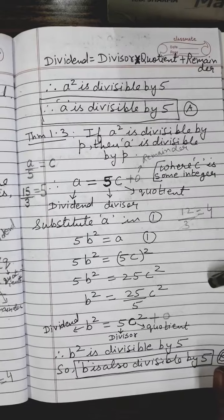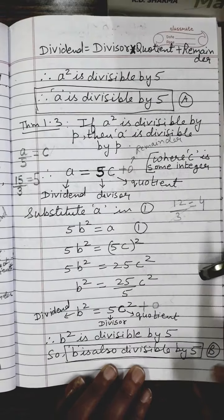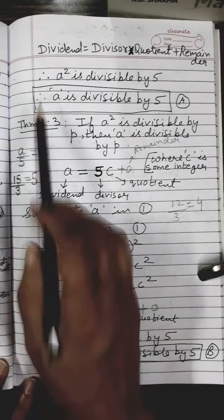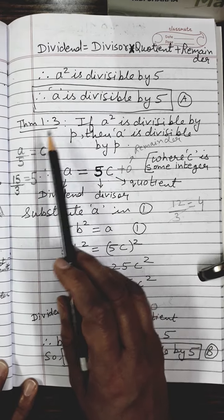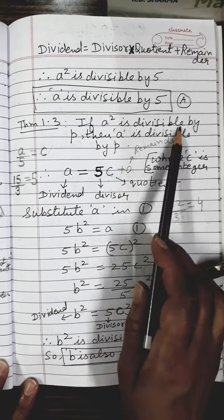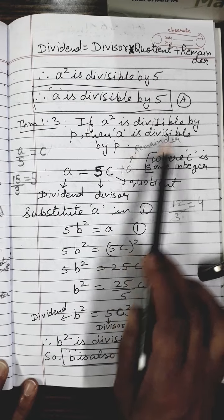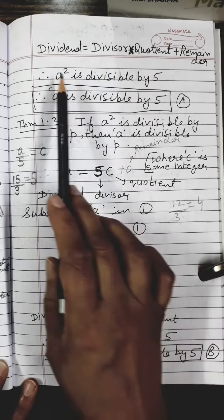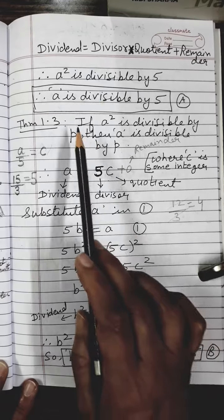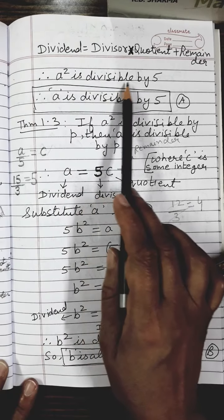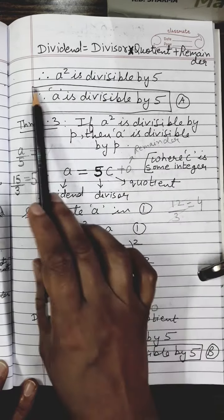Now, there is theorem 1.3 in your NCERT book — this is an important theorem which we will use here. It states: if a² is divisible by p, then a is divisible by p. Comparing this theorem with our statement that a² is divisible by 5 (here p is replaced by 5), according to this theorem, if a² is divisible by 5, then a is also divisible by 5.